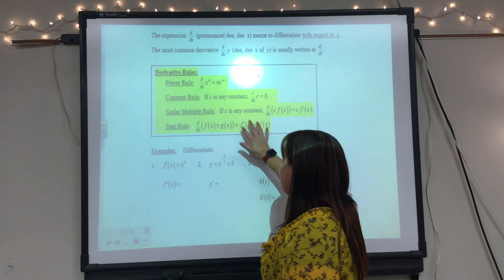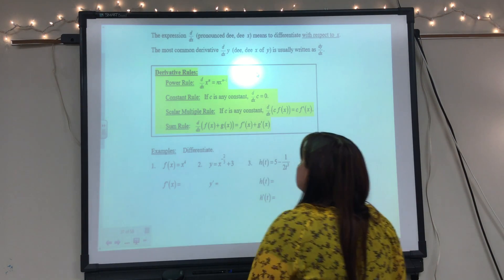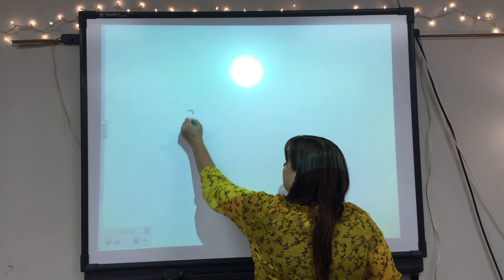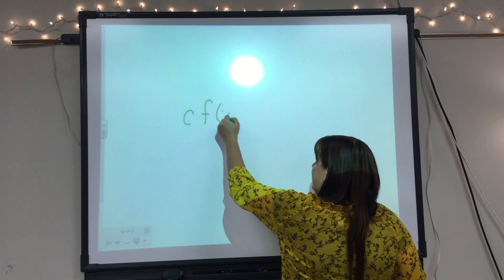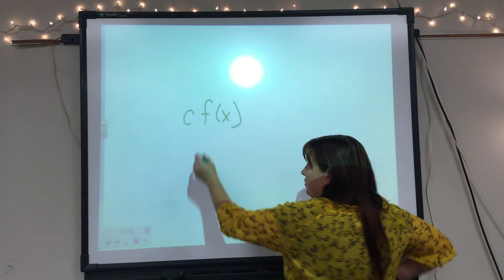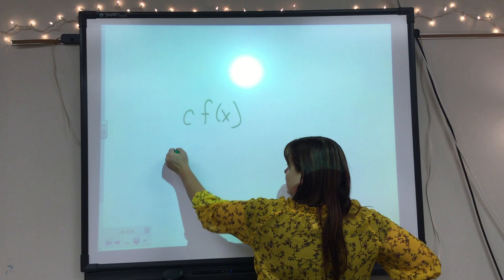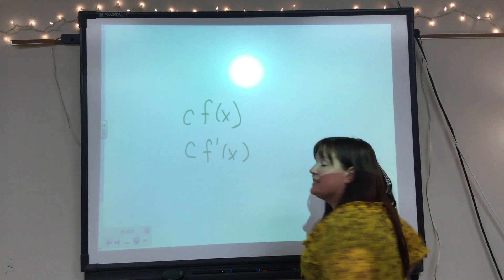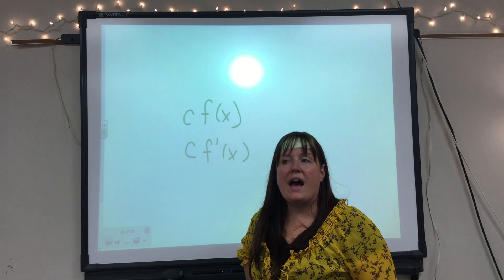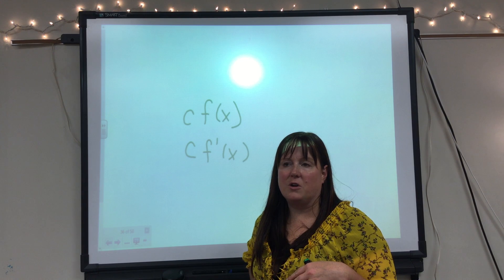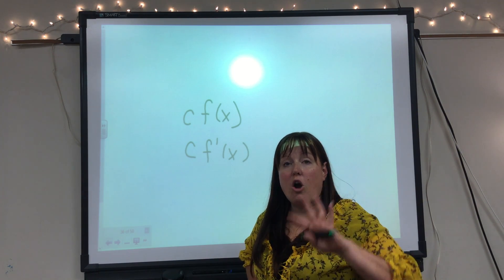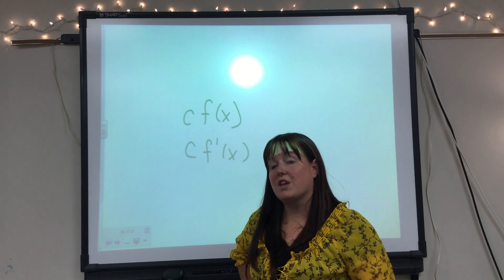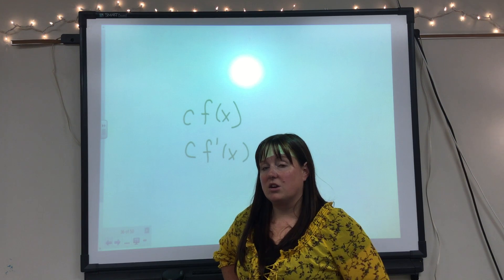The scalar multiple rule tells us that if we have a function multiplied by a scalar, when we take the derivative we just take the derivative of the function and multiply it by the same scalar. So if we have 3 times x to the fourth, we just differentiate x to the fourth and then multiply by that constant 3 in front.